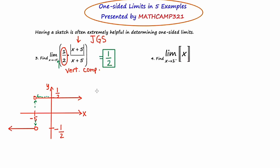So the answer to this question is one half. If the question had been stated: find the limit of the same exact graph as x approaches negative five from the left, what do you think the answer would be? Well, if you approach negative five from the left, the y values are now hovering down here at a very consistent negative one half.